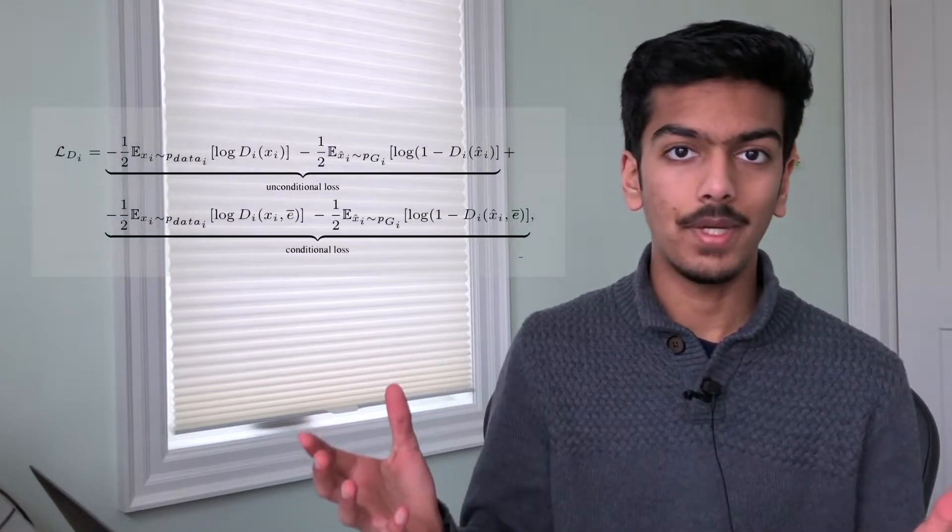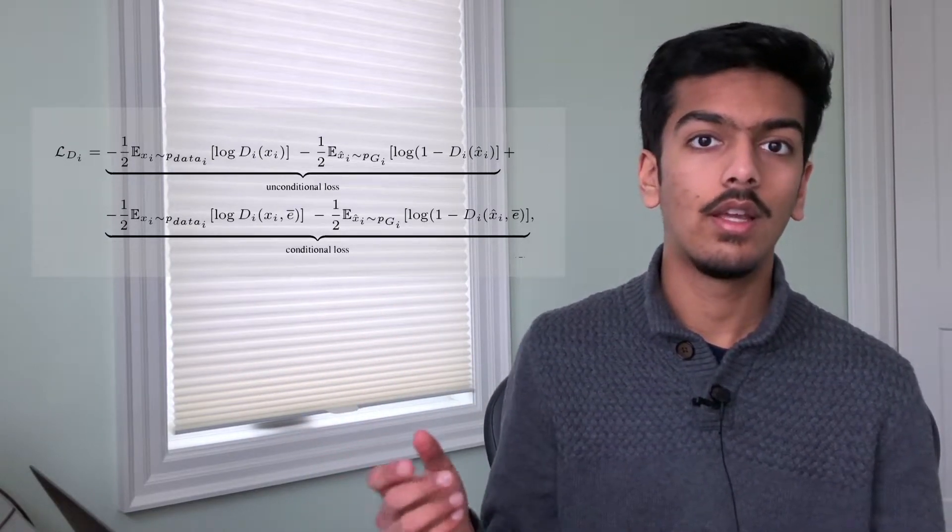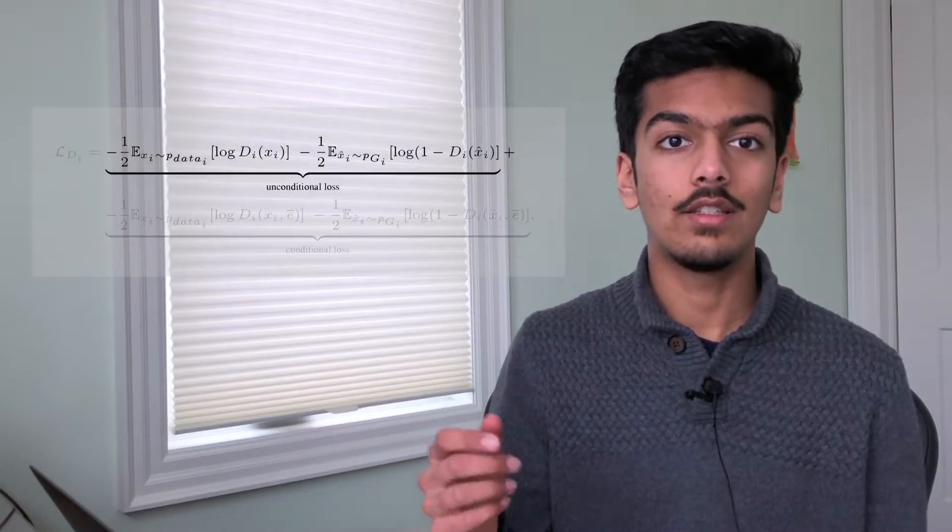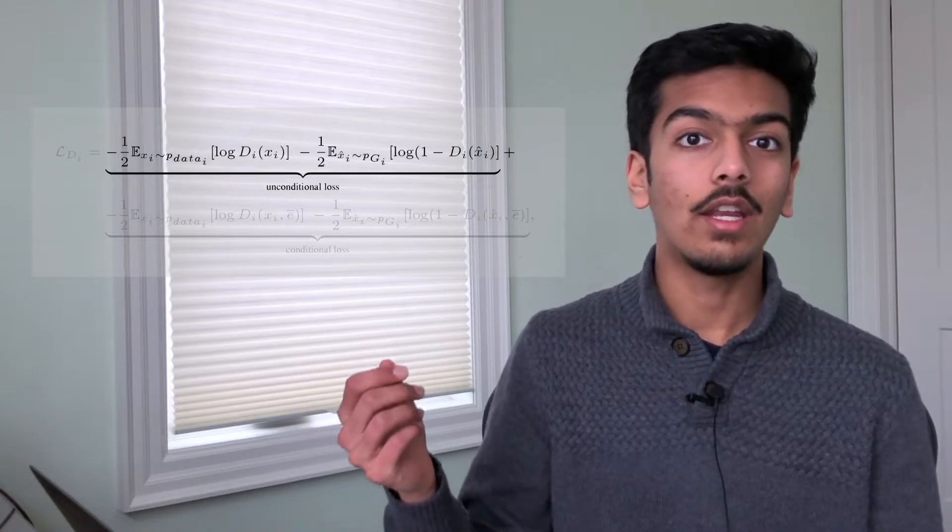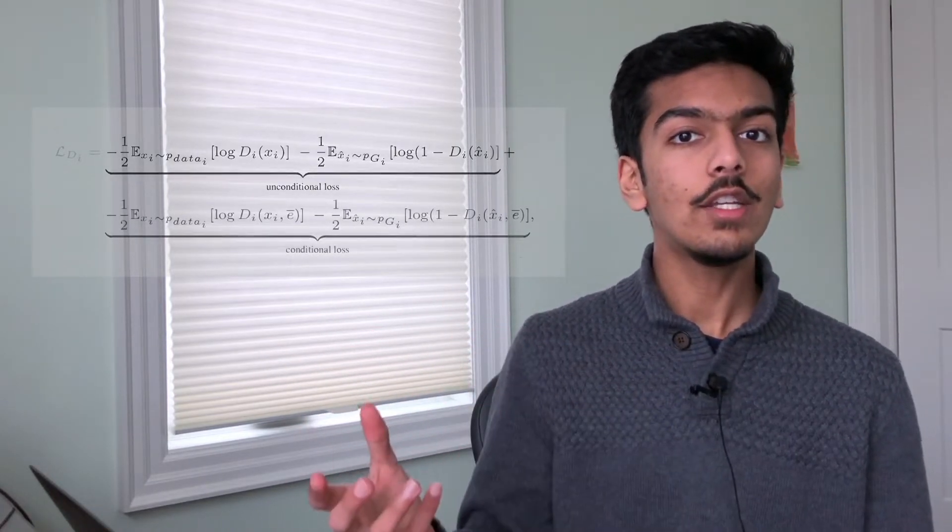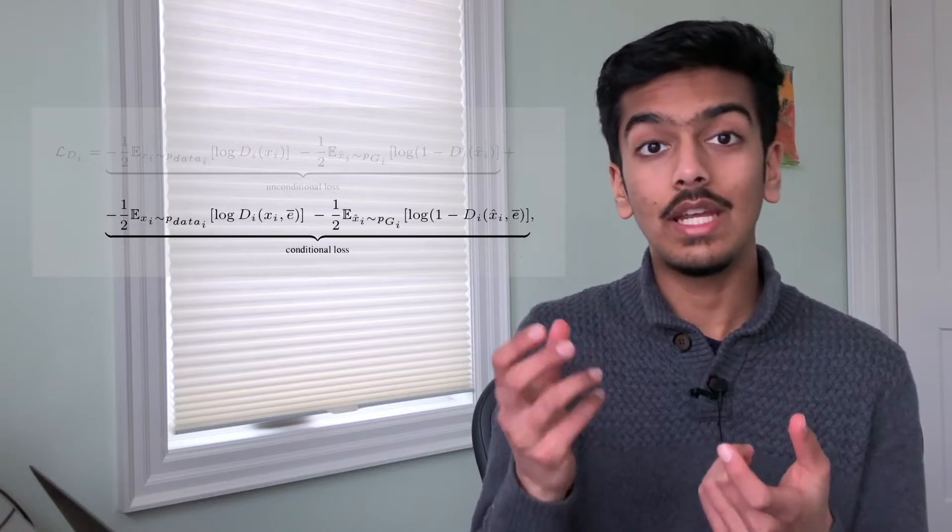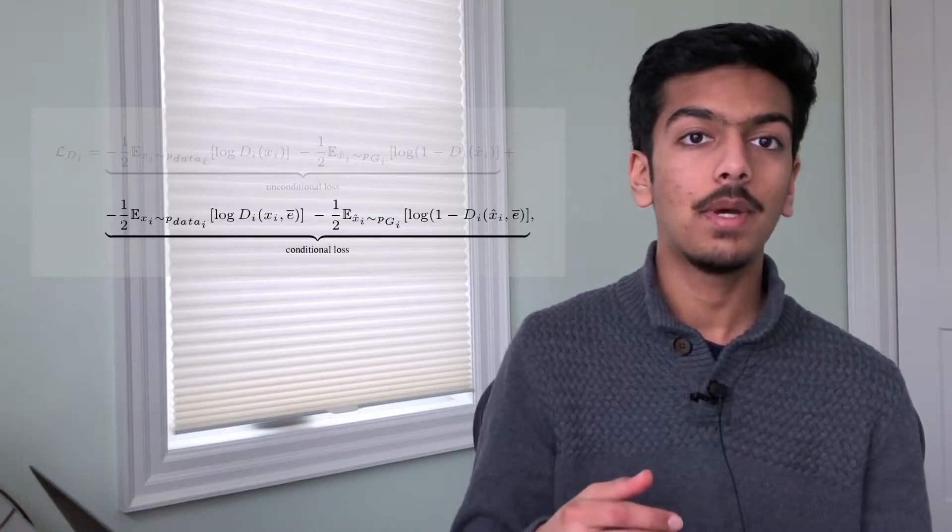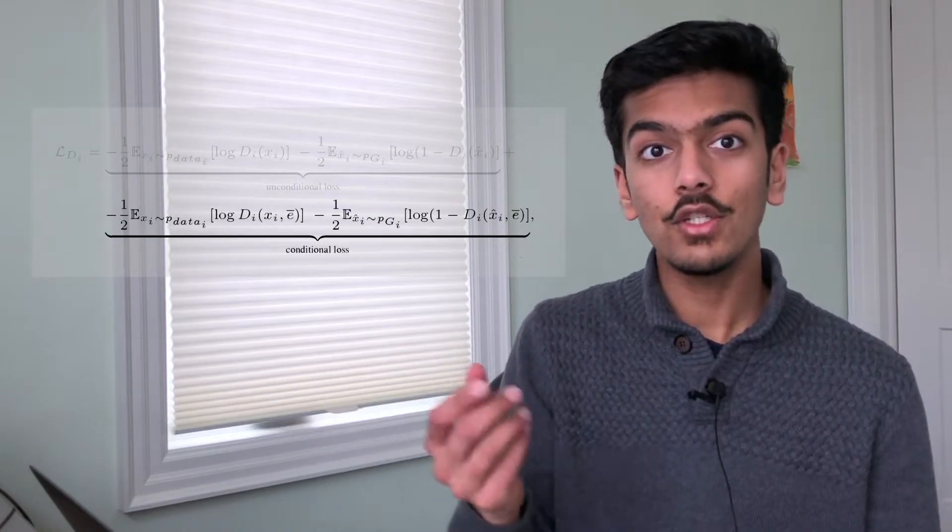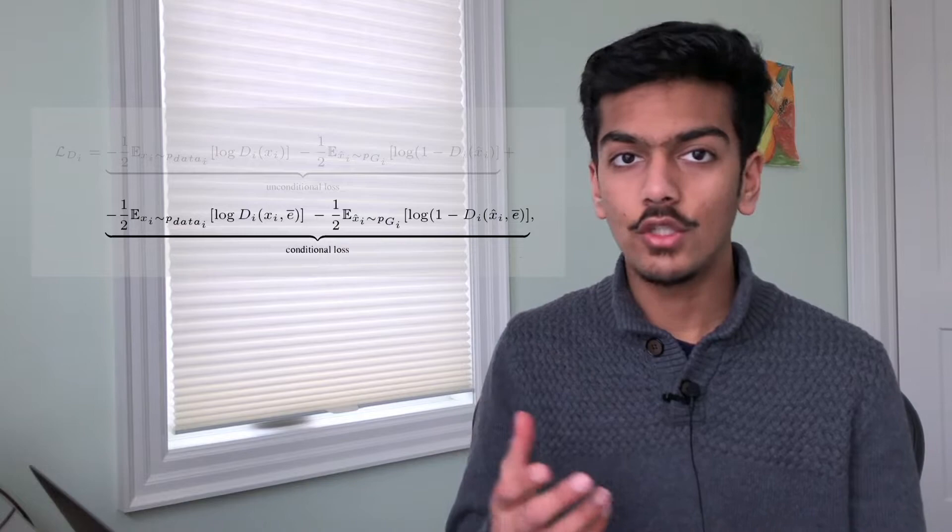More formally, this is what the loss looks like for a discriminator. So it's broken up into a conditional and unconditional loss. Basically, the unconditional loss is the discriminator trying to figure out whether the image is real or fake. So it's trying to score a high value for real images and a low value for fake images. The conditional loss is how similar the sentence is to the image. So does the sentence correspond with the image? Do they make sense together? And again, it's trying to maximize the sentence and a real image and minimize its score for a sentence and a fake image. Fake images being images generated by the generators.